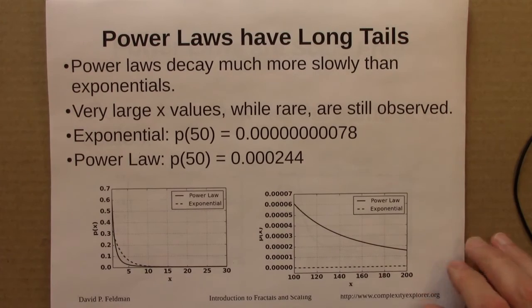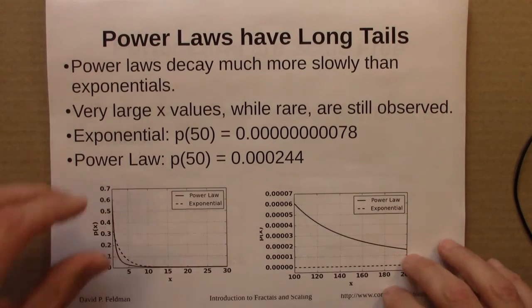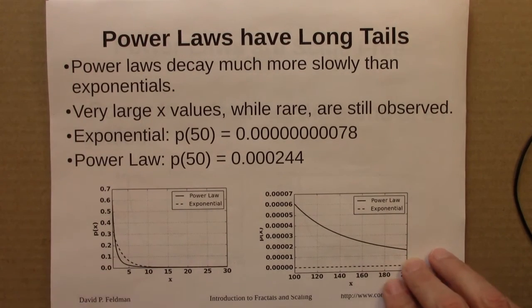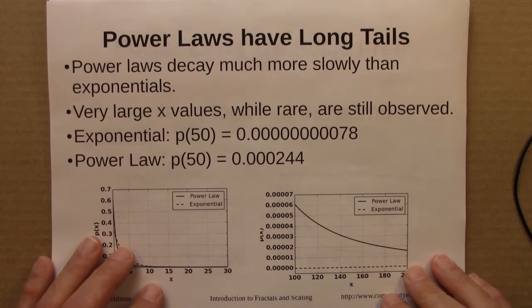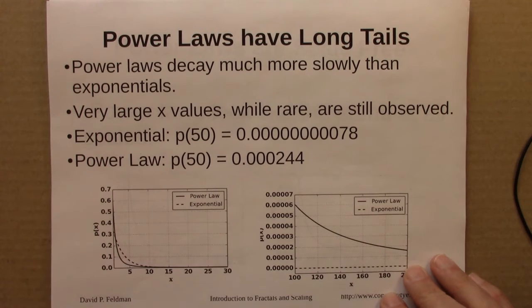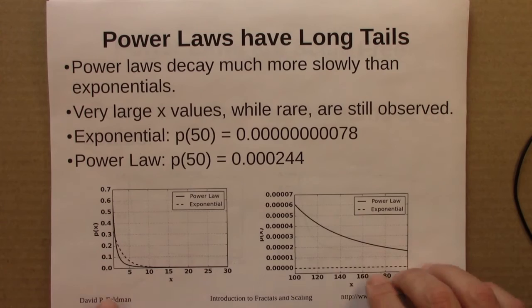Alright, so back to power laws. Some of the features of power laws, one of the important features, is that power laws have long tails. And what that means is that they decay much more slowly than exponentials. That yes, large values of x, whatever that may be, word frequency, or so on, are small. But they're not exponentially small.